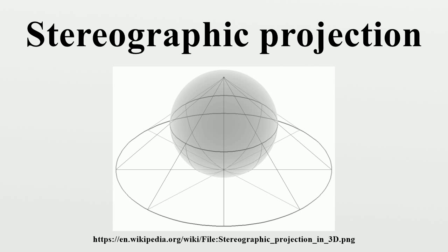The stereographic projection was known to Hipparchus, Ptolemy, and probably earlier to the Egyptians. It was originally known as the Planisphere projection. Planisferarium by Ptolemy is the oldest surviving document that describes it. One of its most important uses was the representation of celestial charts. The term Planisphere is still used to refer to such charts.